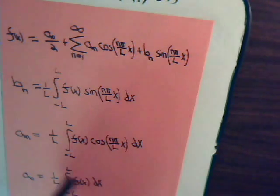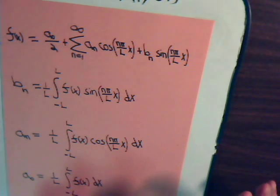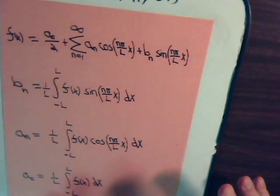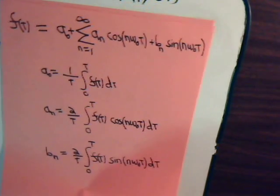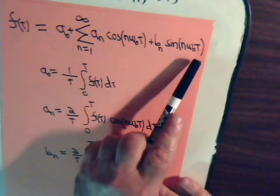And again you'll be seeing specific examples of these in the coming videos. Also we don't have a formula written out for it but there is an exponential form of the Fourier expansion. And we will cover that in video number 5.